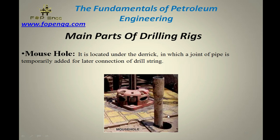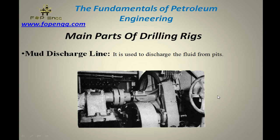Mousehole — located at the rig floor, the mousehole is mainly used to connect or disconnect any pipe joint or crossover during run-in hole and pull-out of hole. It is located under the derrick, where a joint of pipe is temporarily placed for later connection to the drill string.